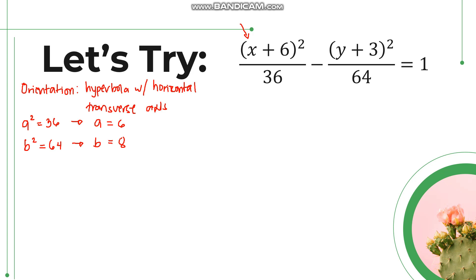After that, we can now solve for c. Since what we need are a, b, and c, and also h and k, we have to solve for c. Remember that a, b, and c follow the relationship a squared plus b squared equals c squared, and we can use this to identify the value of c.